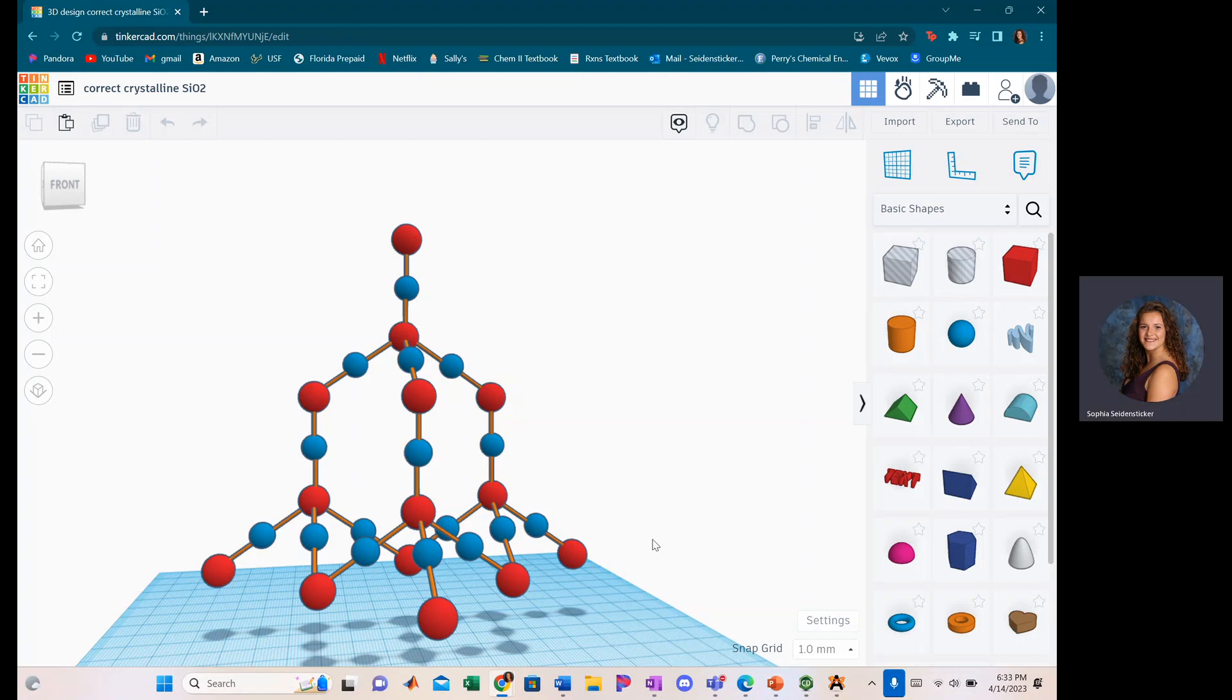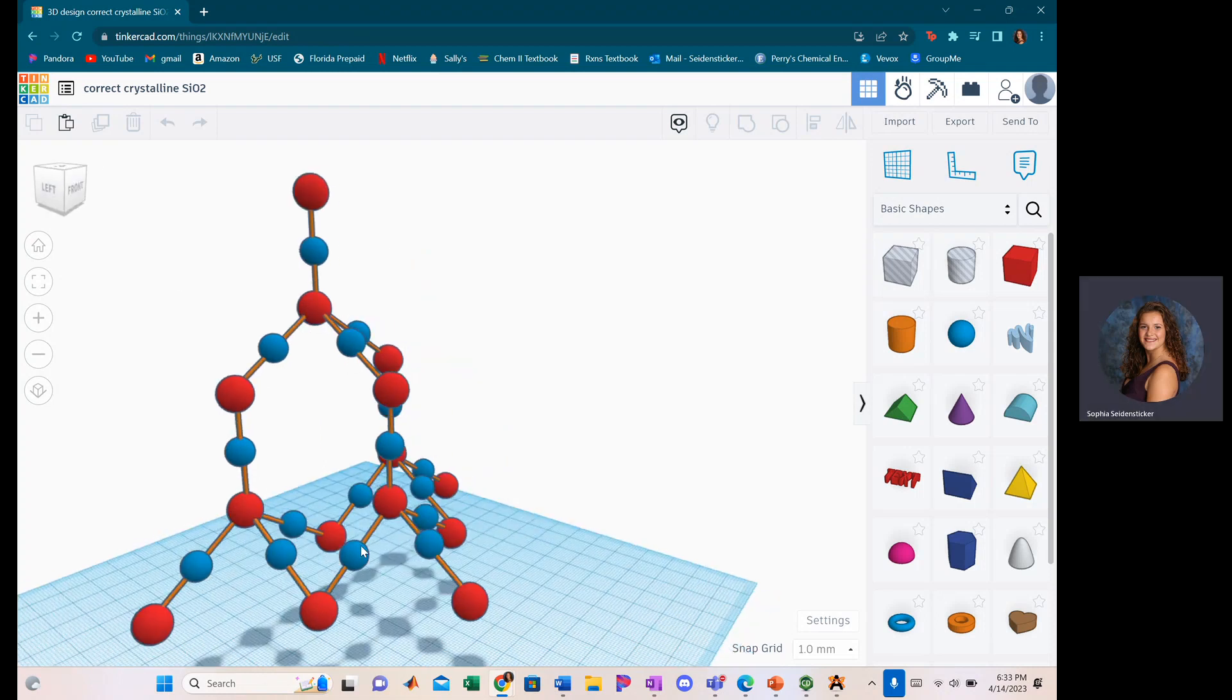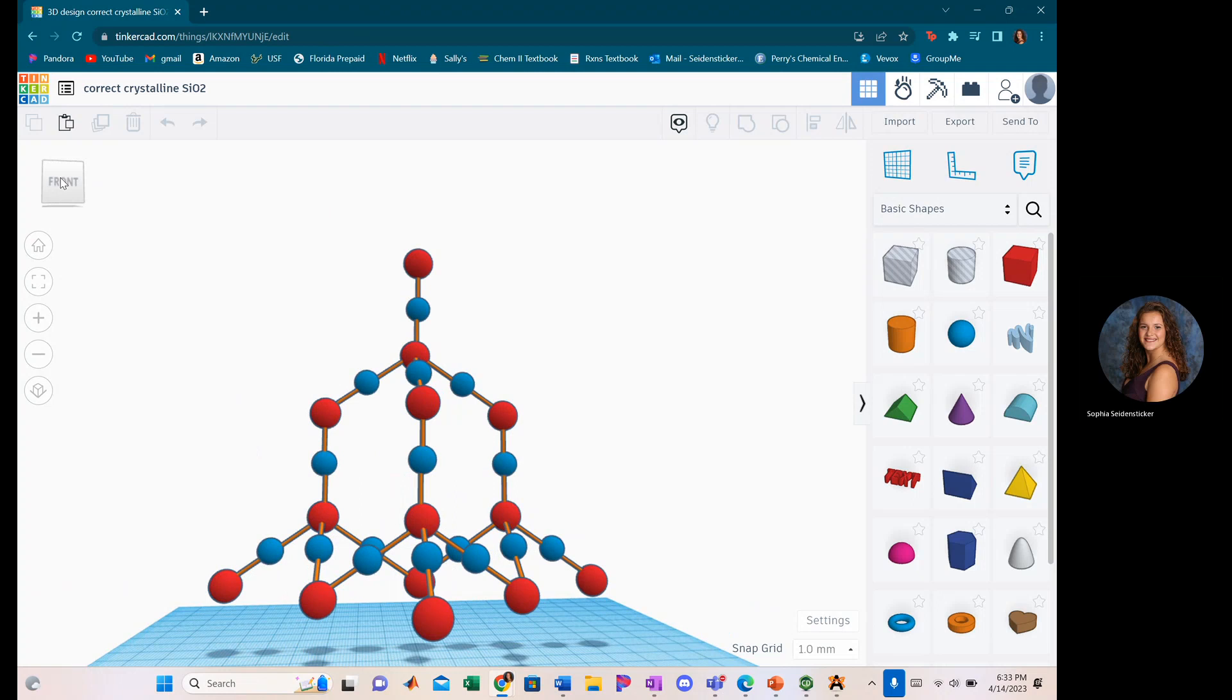Here is a 3D model I created of a section of crystalline SiO2. It has a repeating ring pattern. If you follow the mouse, you can see the ring there, and you can also see other rings from different angles. If this model were to continue, you would see rings on all sides.